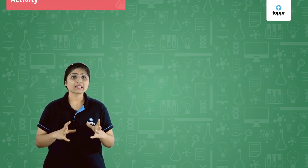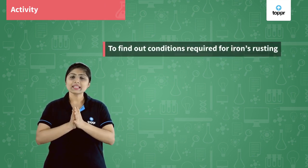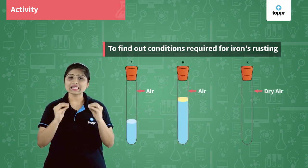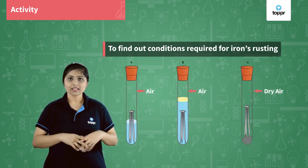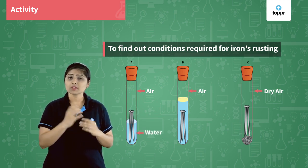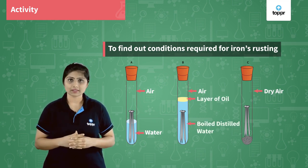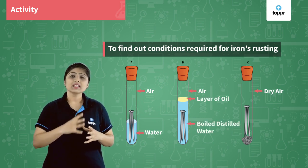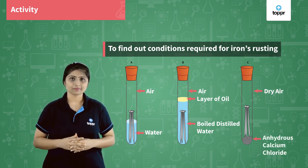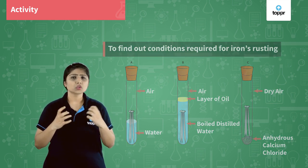Let us do an activity to see how iron corrodes. In test tubes A, B, and C, we have taken clean iron nails. In test tube A, we put fresh water. In test tube B, we put boiled water and a layer of oil on top of it. And in test tube C, we take anhydrous calcium chloride salt, which is a dry salt. Now we leave these test tubes undisturbed for about 2 days.